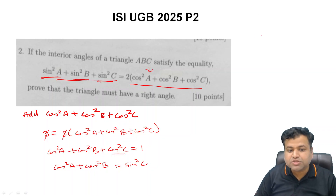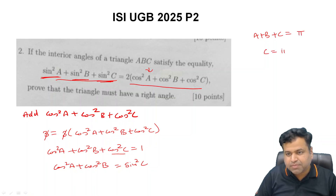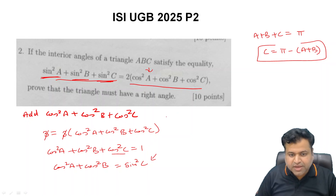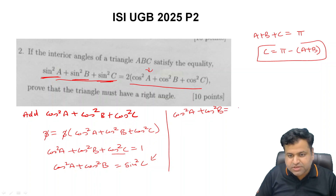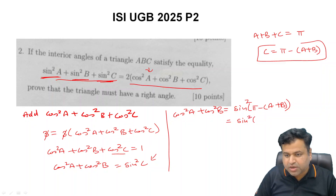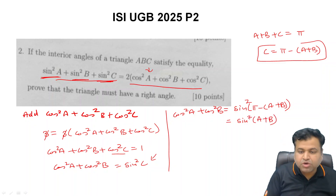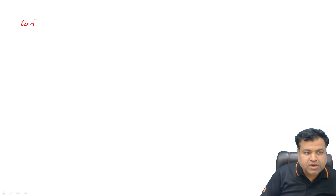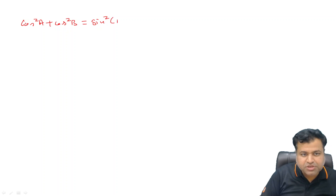Since A, B, C are the angles of a triangle, we know A + B + C = π, so C = π - (A + B). Substituting this, we get cos²A + cos²B = sin²(π - (A + B)). Since sin(π - θ) = sin θ, the equation reduces to cos²A + cos²B = sin²(A + B).